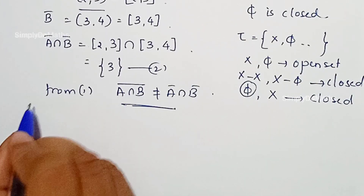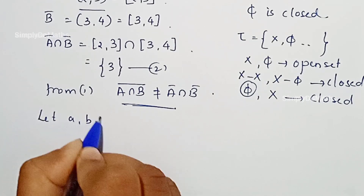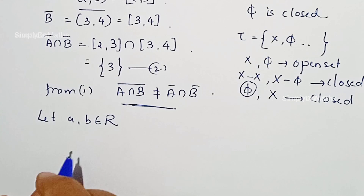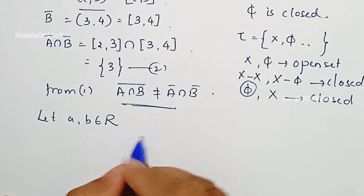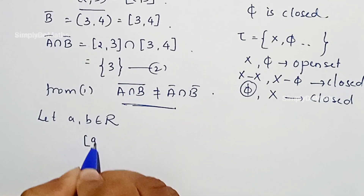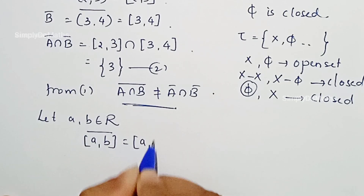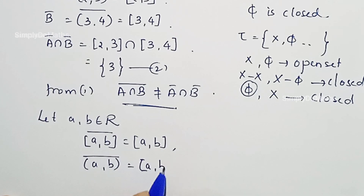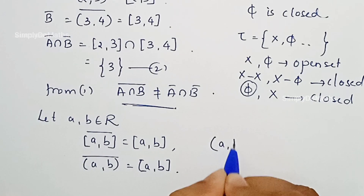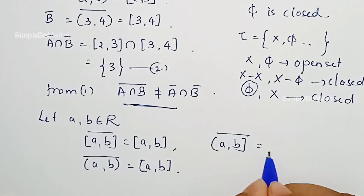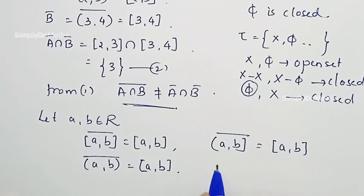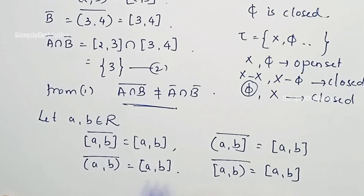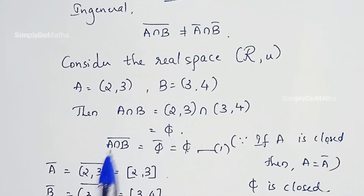Keep in mind: for any A, B elements of the real space, the closure of a closed interval [A, B] is again the closed interval [A, B]. The closure of an open interval (A, B) is also the closed interval [A, B]. And the closure of any semi-closed or semi-open interval is the closed interval [A, B] itself. By using this rule, we can find the closure of these intervals.